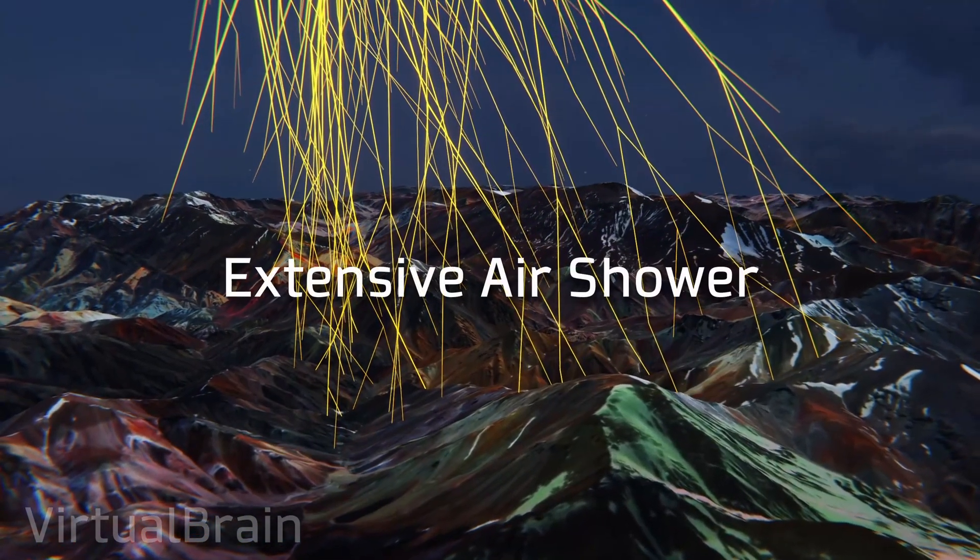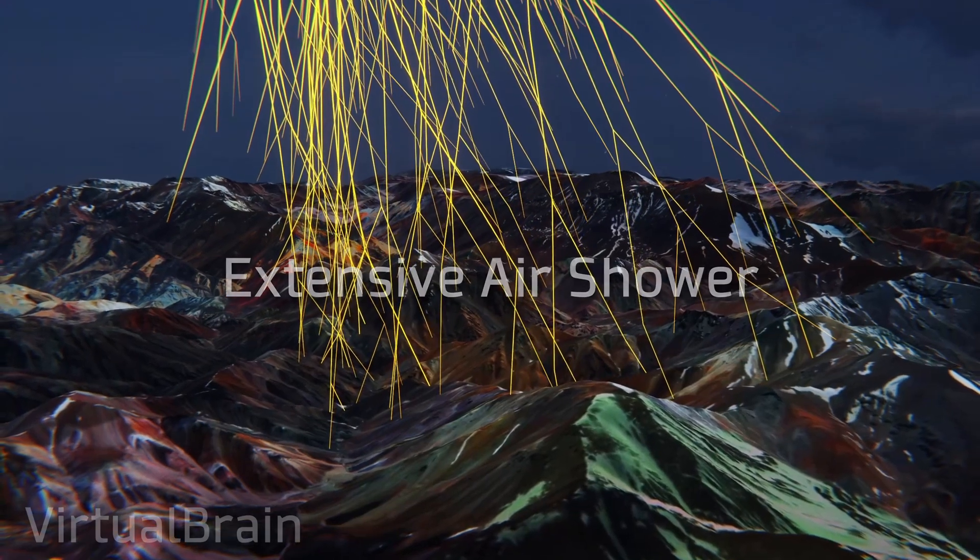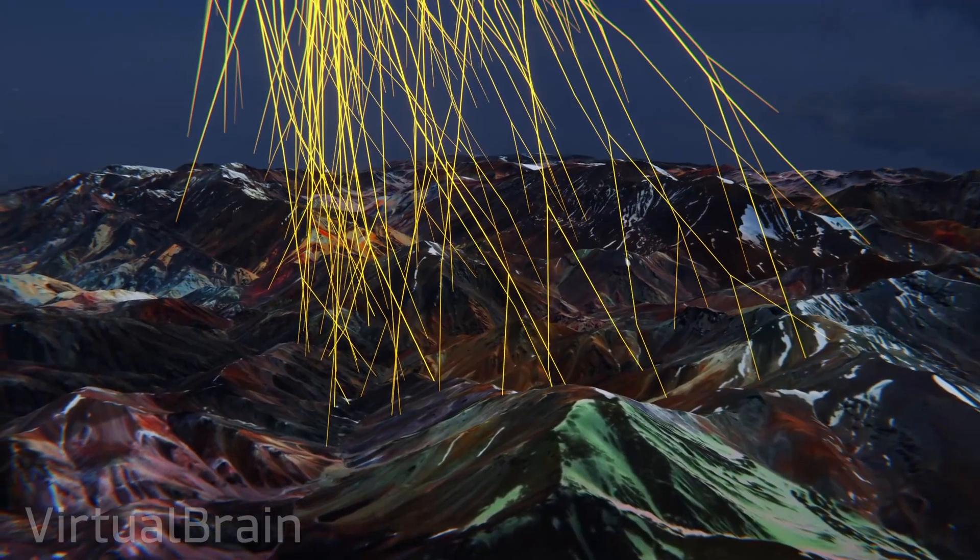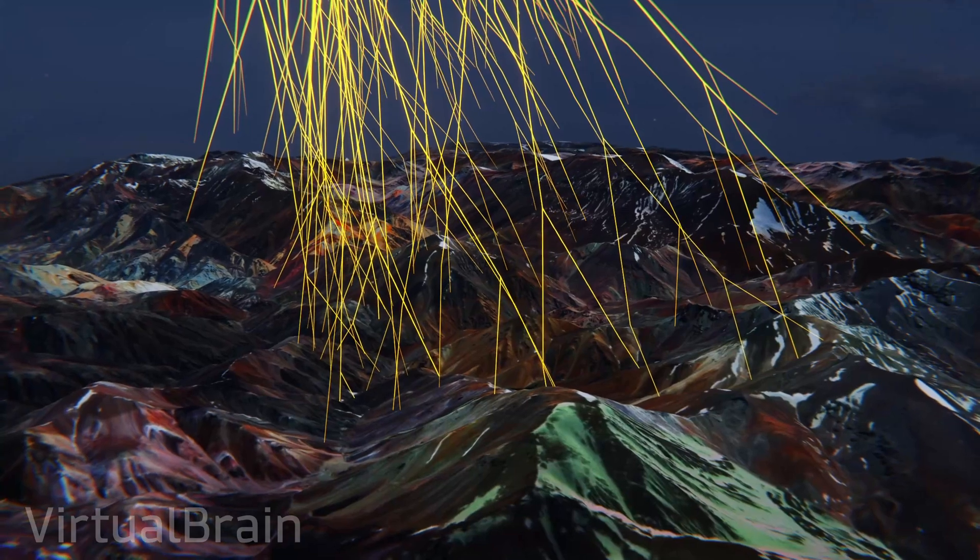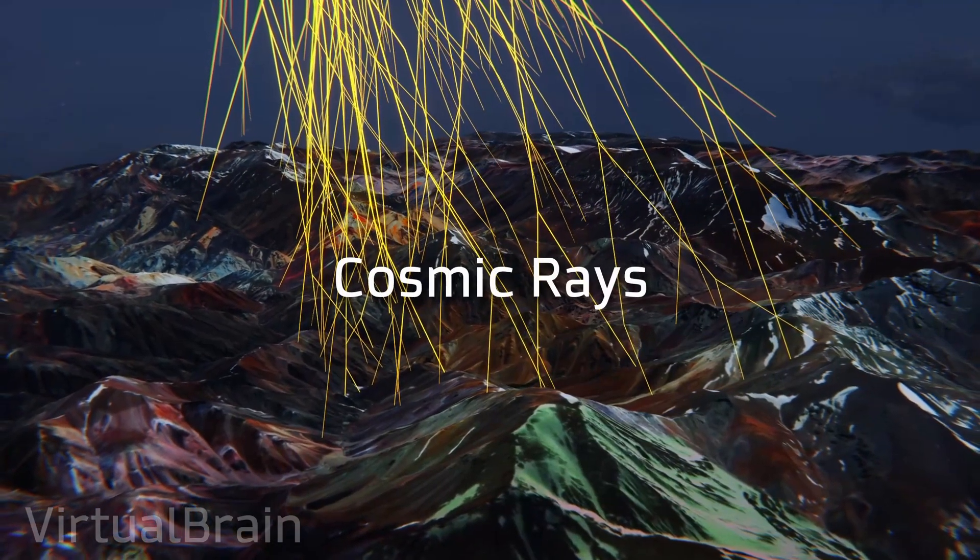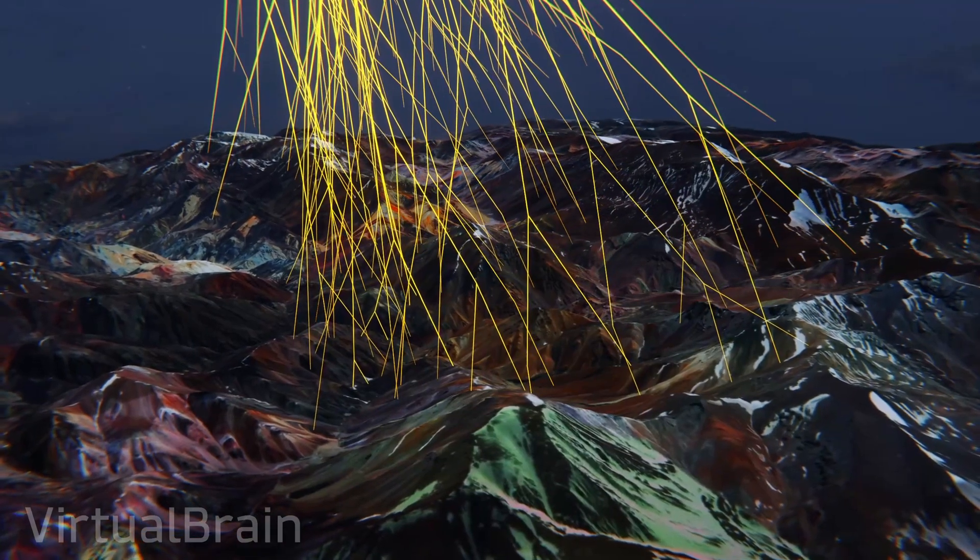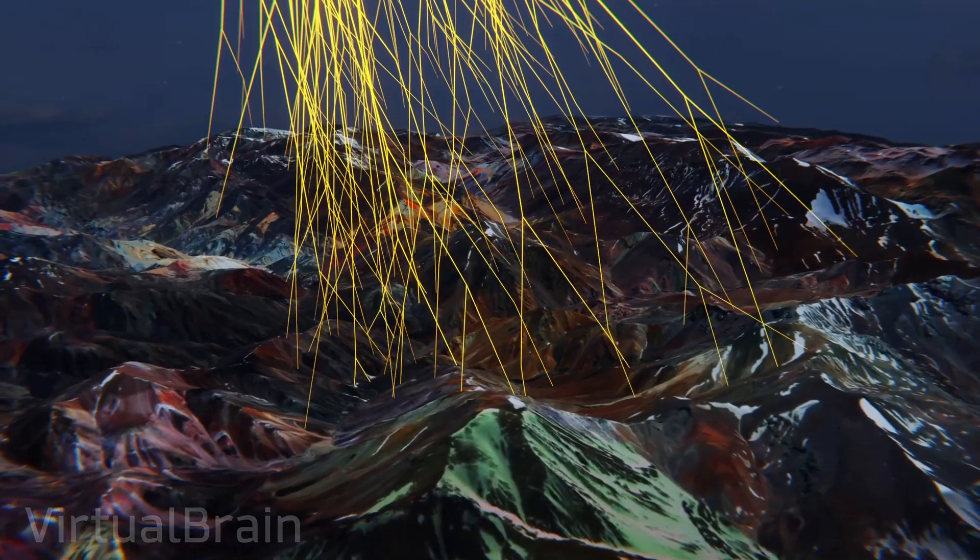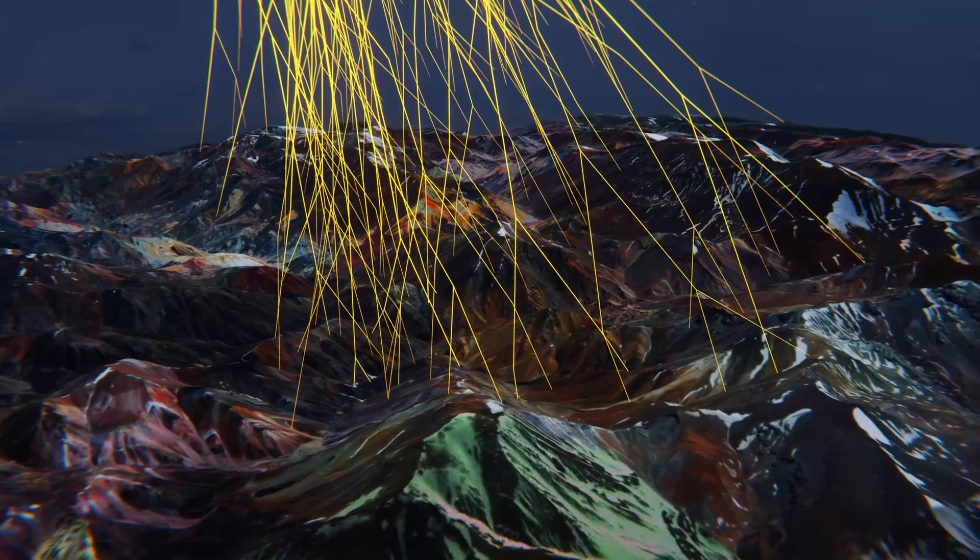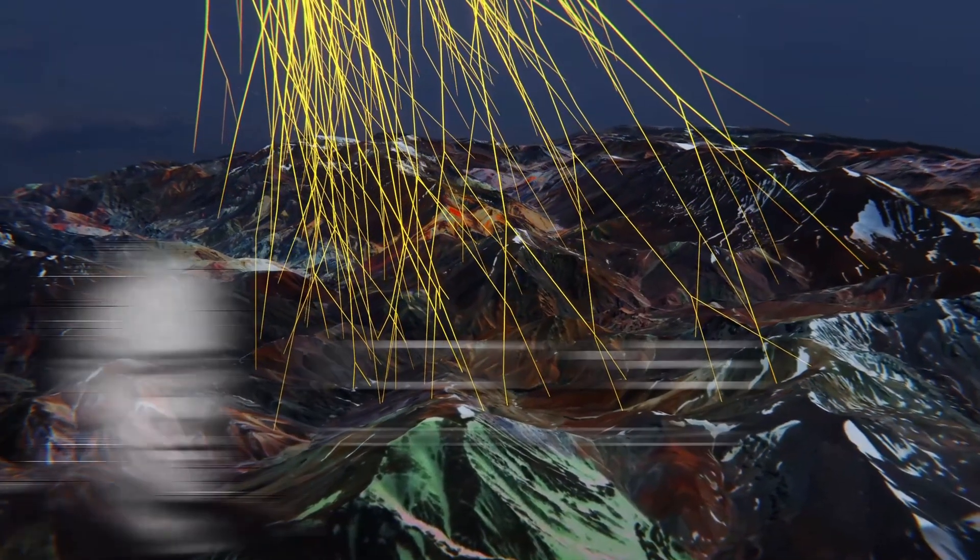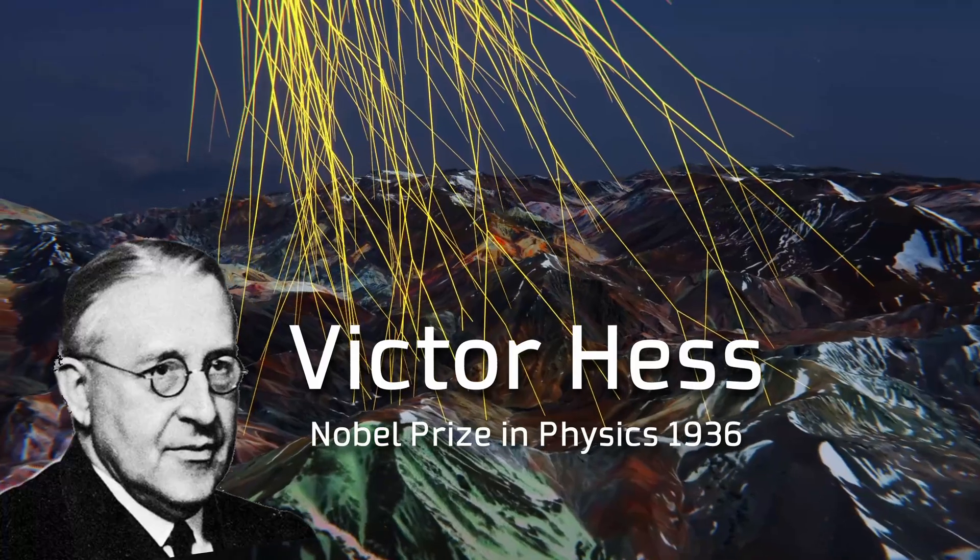This forms a shower of subatomic particles whose trajectory resembles the roots of a tree and eventually reaches the Earth's surface. This phenomenon is known as extensive air shower and both the particles that traveled through space and those generated after the collision are known as cosmic rays. These can be easily detected with experiments on the Earth's surface, and in fact their study earned Victor Hess the Nobel Prize in Physics in 1936.